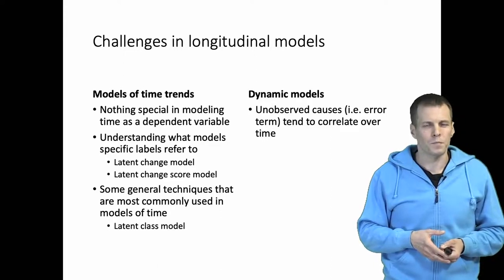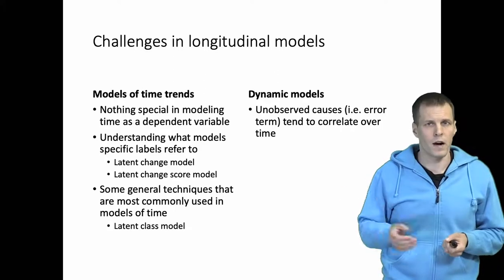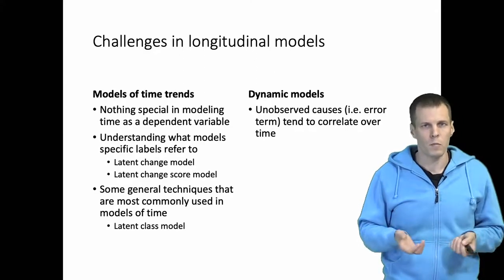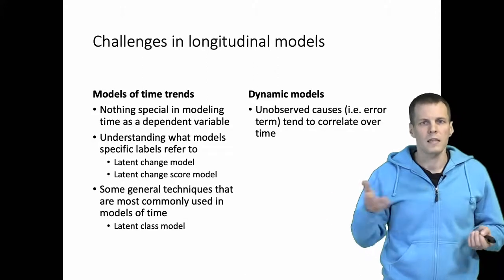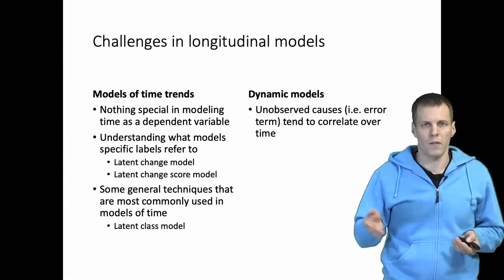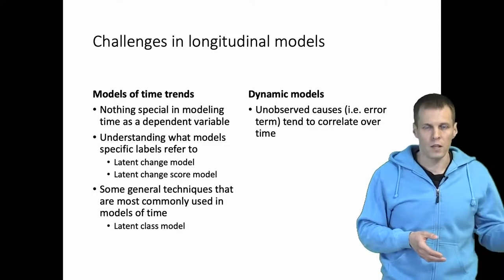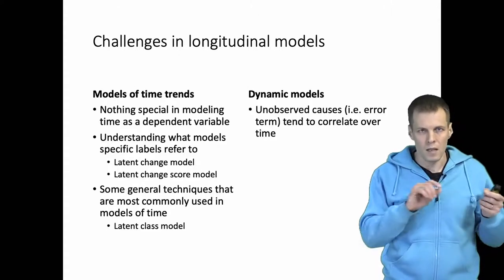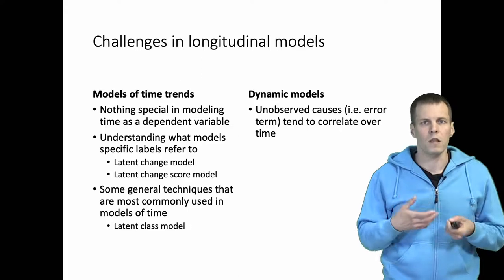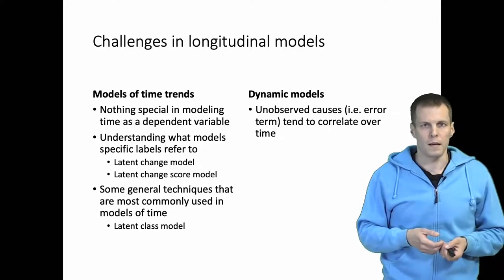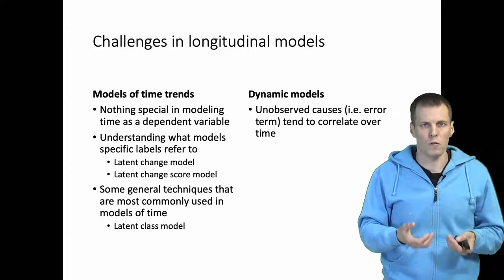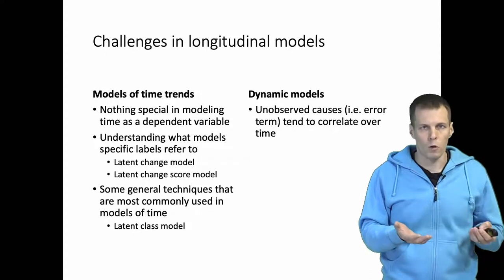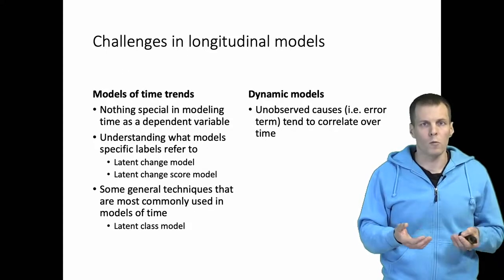If you think about the x variables and the y variable in your model, quite often if we calculate autocorrelations for those variables they tend to be pretty strong. So there's a tendency that a company that is profitable now is also profitable the next year. If a company is large now it doesn't suddenly become a small company the next year and then become a large company again. The company size tends to persist. So these factors that we observe tend to persist over time. And if the variables that we actually observe correlate over time, then it's unreasonable to assume that those variables that we don't observe that go to the error term would not correlate over time.